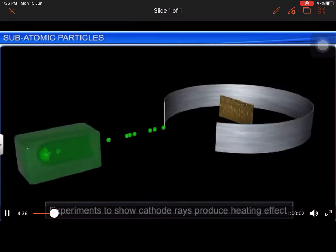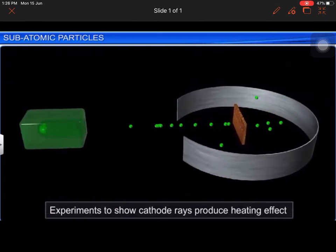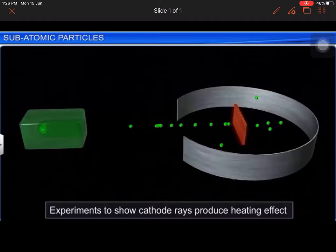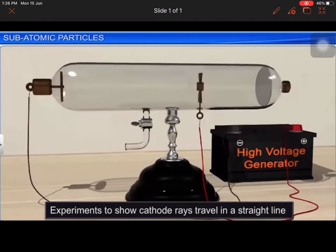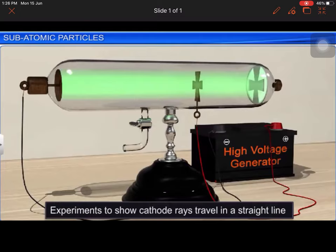He then observed that if a metal foil is placed in the path of cathode rays, it becomes hot. This implied that cathode ray produced a heating effect. Thompson also observed that if a solid object is placed in the path of cathode rays, it produced a sharp shadow of the object. Therefore, he concluded that cathode rays travel in a straight line.